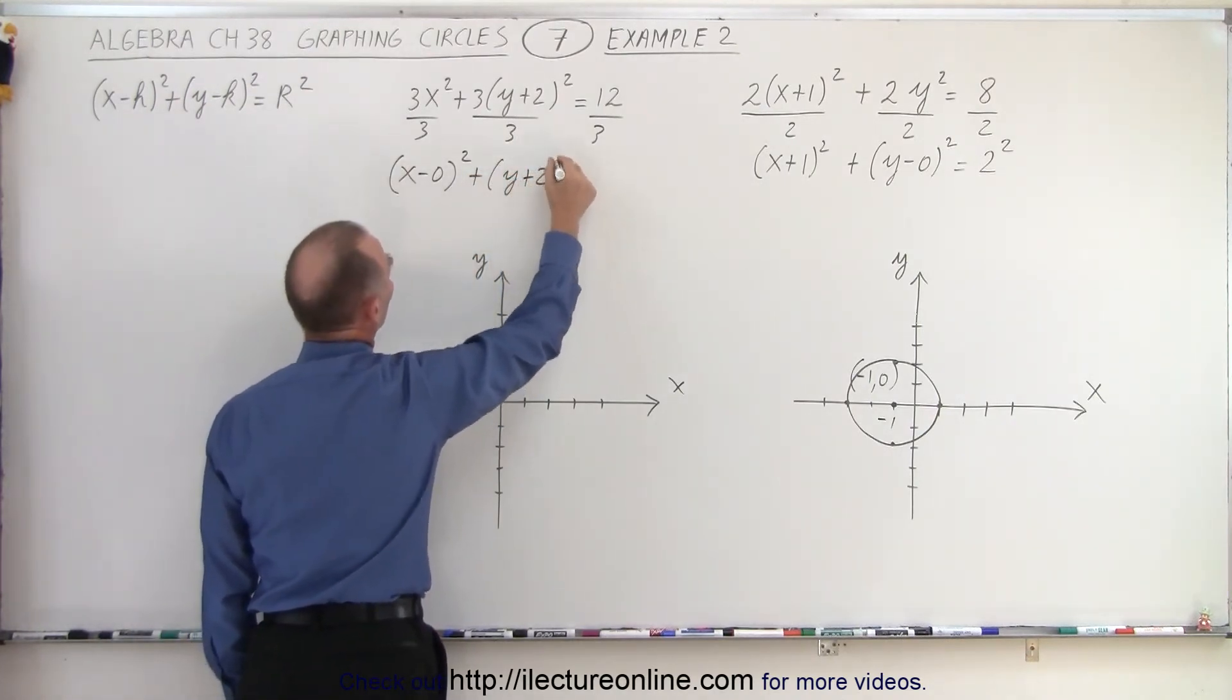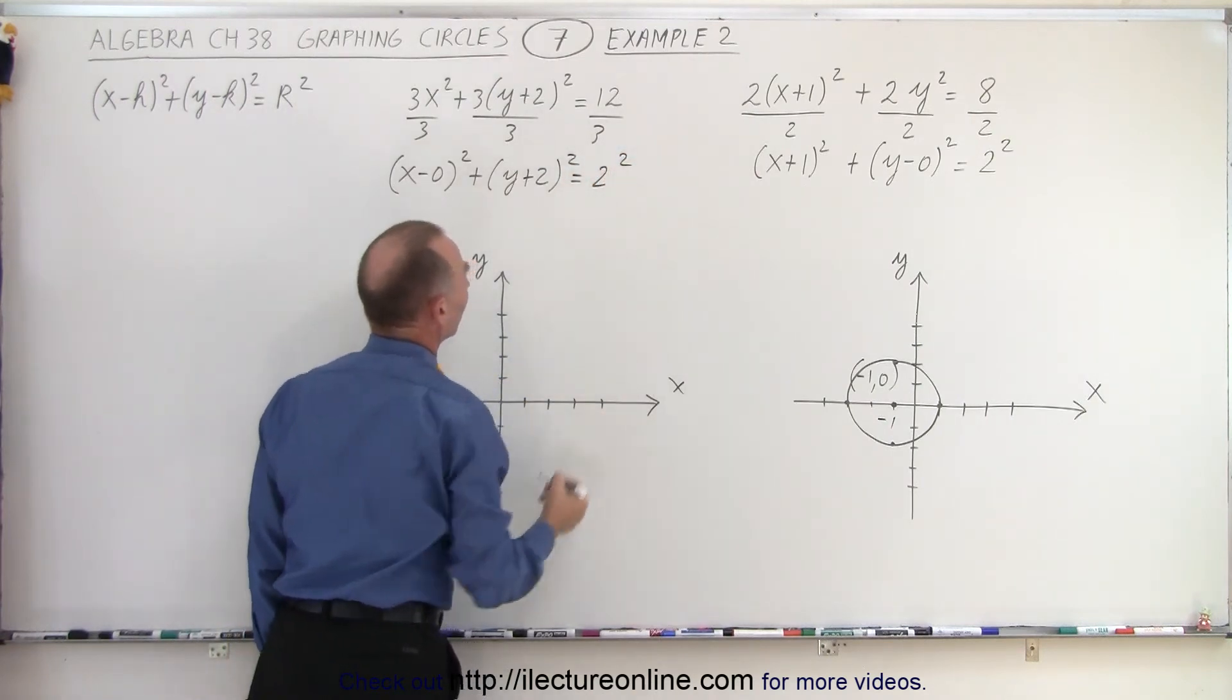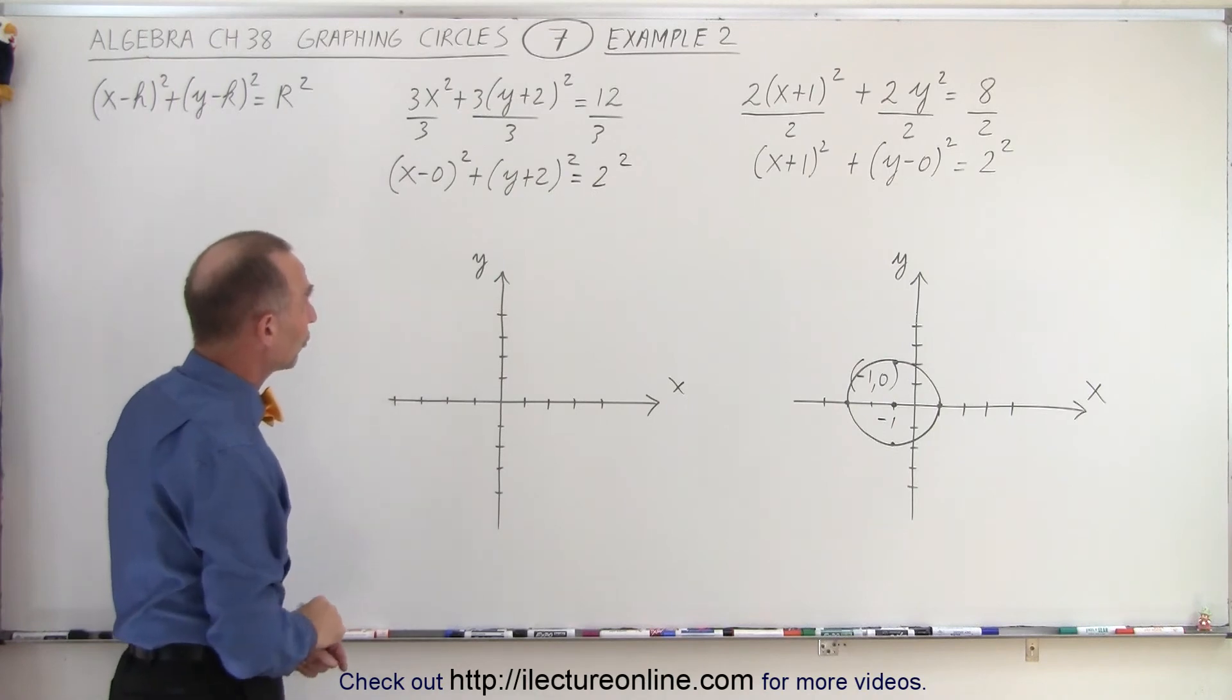Plus (y+2)² is equal to 4, and 4 is also 2². So again the radius of that circle will be 2 as well.